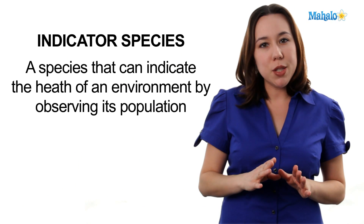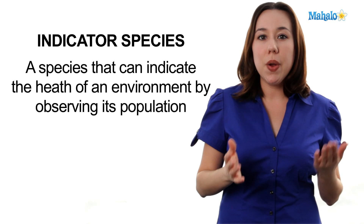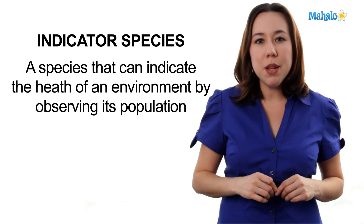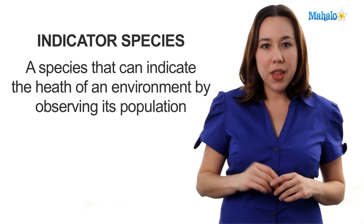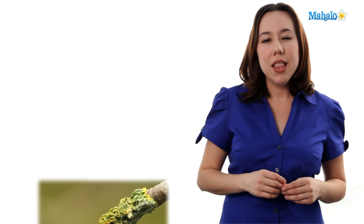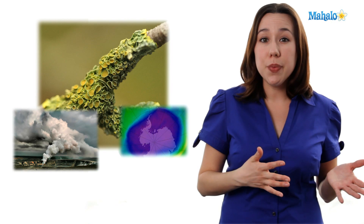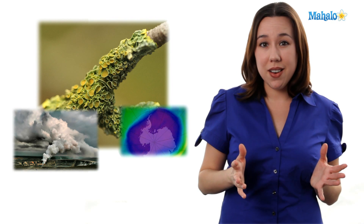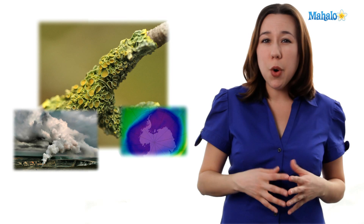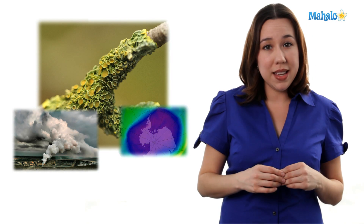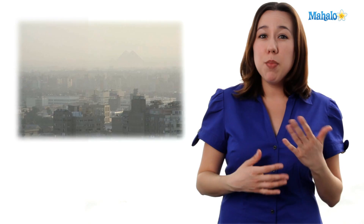Our next example is indicator species. An indicator species is a species that whether absent, present, or in relative abundance, tells scientists a little something about what's going on in the ecosystem. One example are lichens. Lichens are extremely sensitive to things like sulfur dioxide and ozone. If these things are in the air, you can tell because the lichens won't be doing so good and possibly be absent from areas that they used to be in. That can tell scientists that there's probably an air pollution problem in that area.